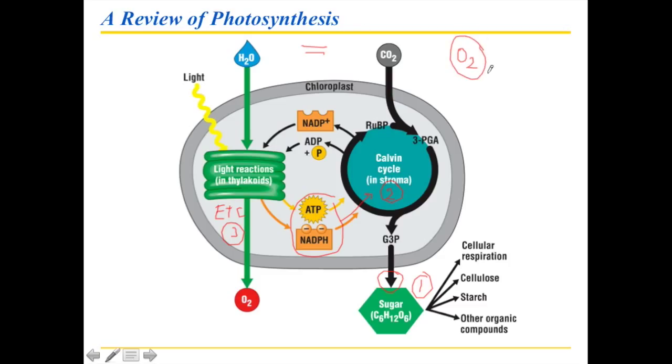If we need oxygen for cellular respiration, that means by necessity photosynthesis must have started before cellular respiration. Photosynthesis makes oxygen right there, that oxygen can then be used in cellular respiration. So photosynthesis evolutionarily is the older process.